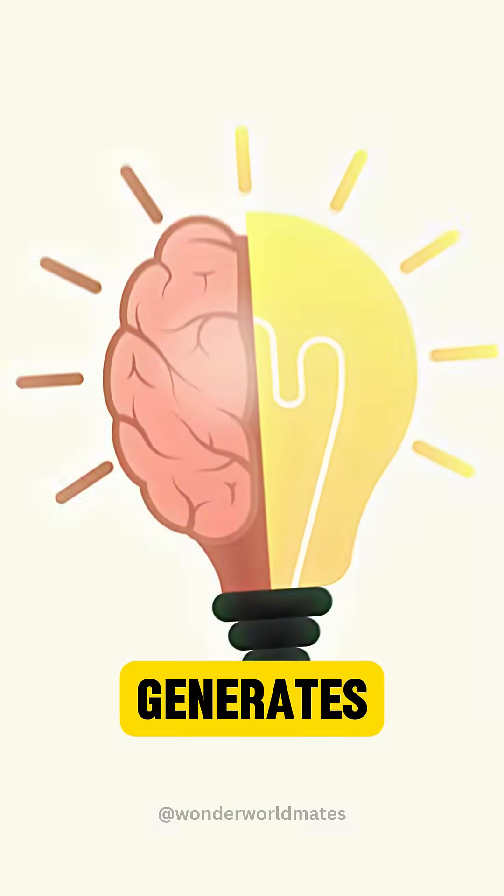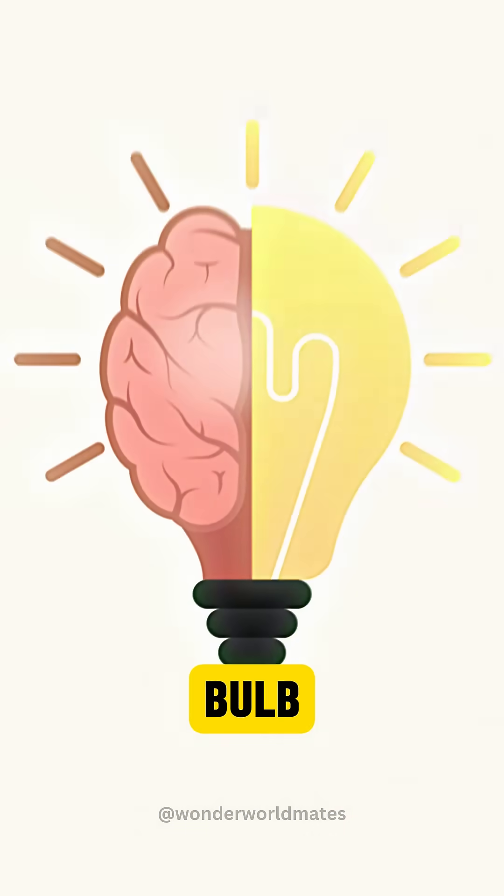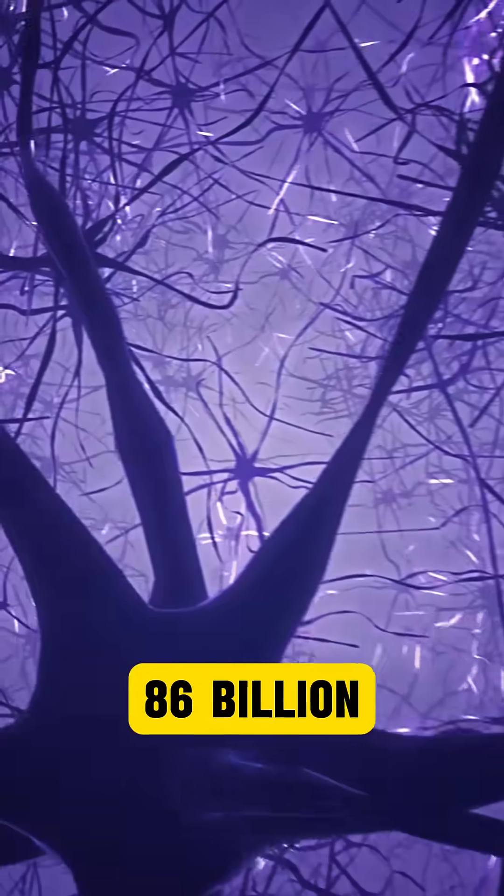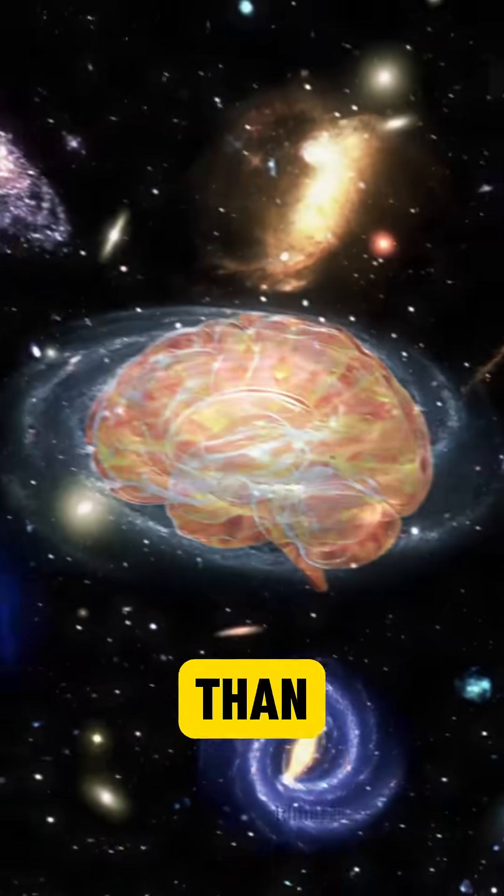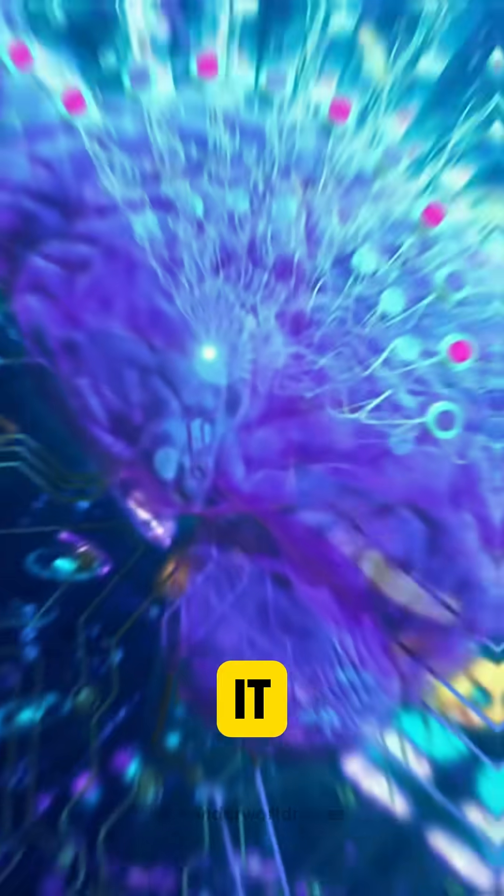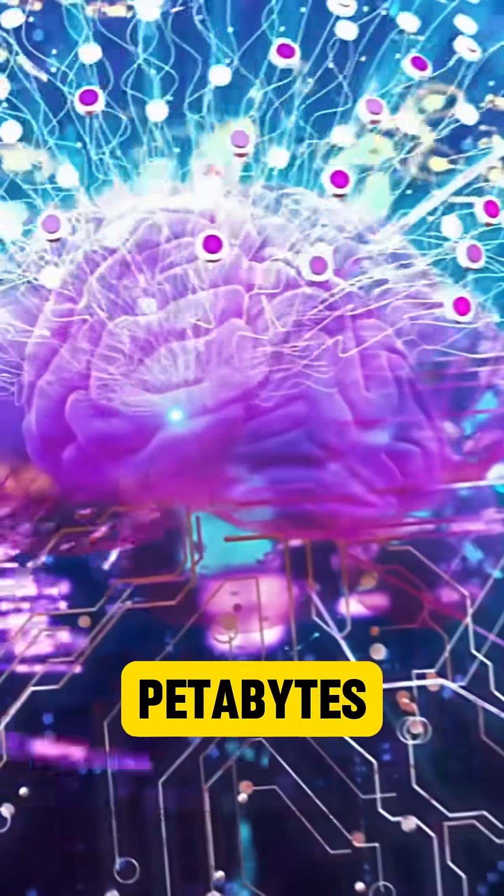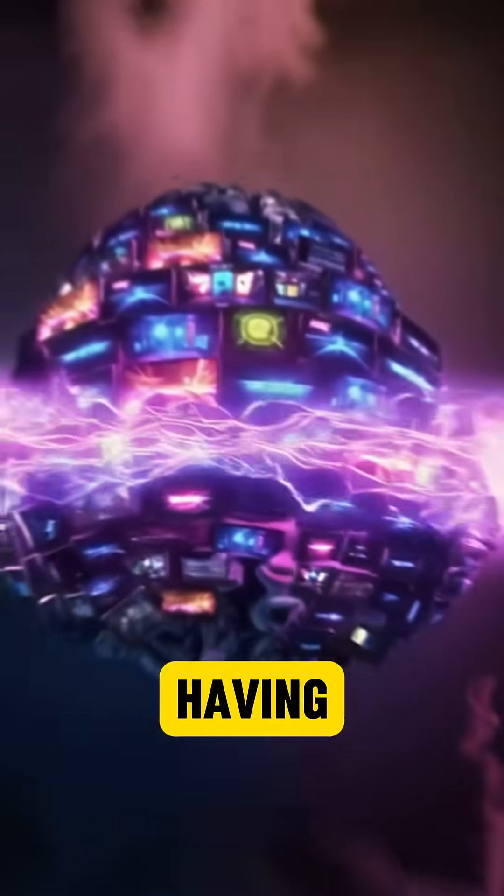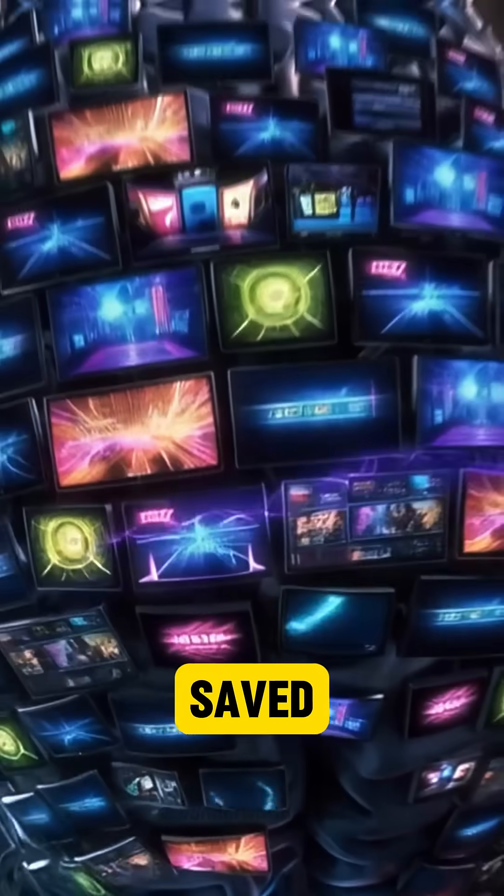Your brain generates enough electricity to power a small light bulb. The human brain has about 86 billion neurons, more than the stars in our galaxy. It can store up to 2.5 petabytes of information. That's like having 3 million hours of TV shows saved in your brain.